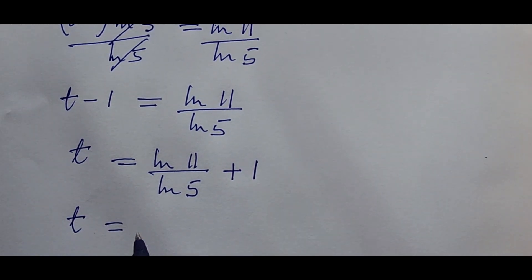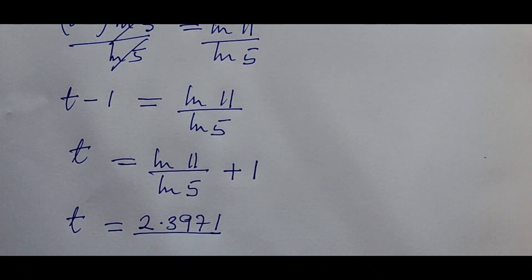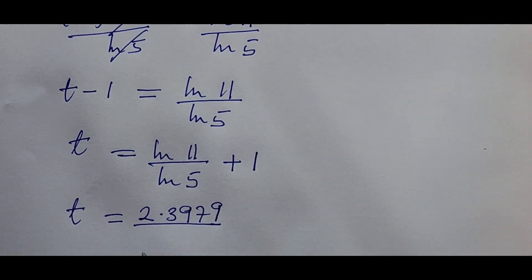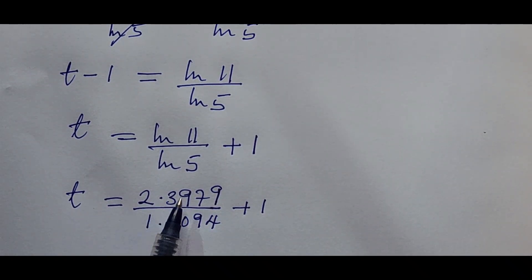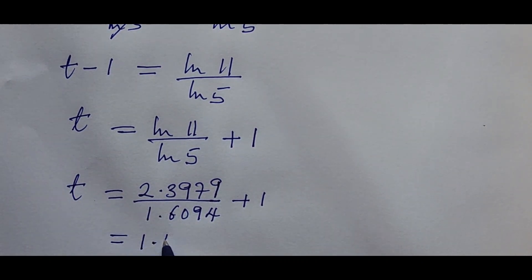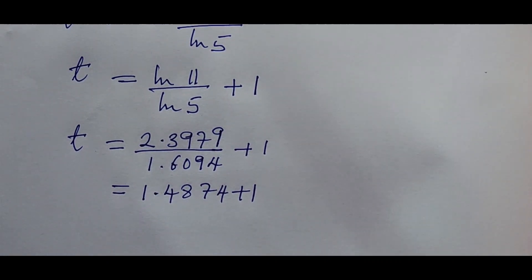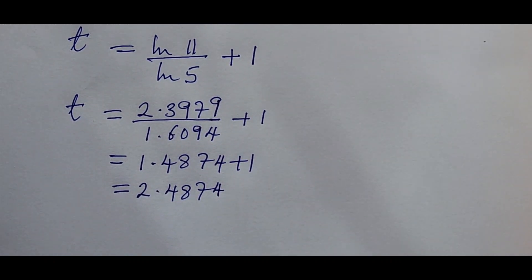This is going to give us t is equal to the ln of 11 will give you 2.3979 all over the ln of 5 will give us 1.6094 plus our 1. Now if you evaluate, use this to divide this, this is going to give you 1.4874 plus our 1. That we add up everything, this is going to give us our 2.4874.